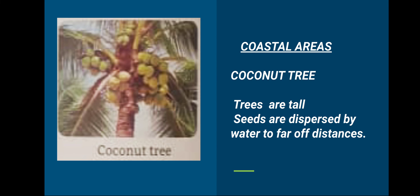So today we studied how some plants are adapted to live in the hot and dry conditions of the desert with shortage of water, like cactus. We also learned about plants with cone shaped structure to survive in snowfall conditions, and about mangroves that live in marshy areas. Thank you.